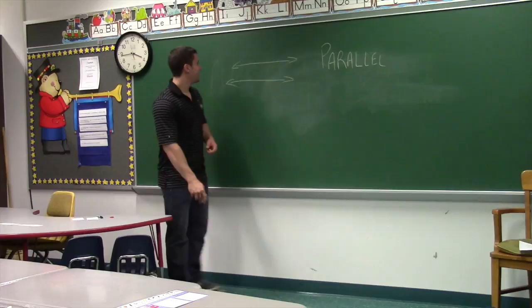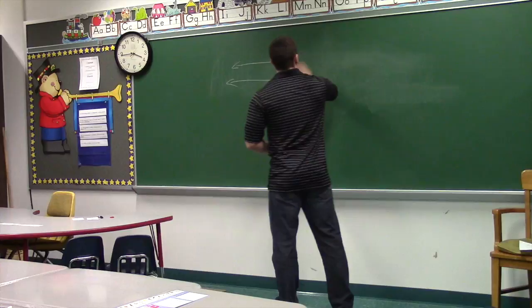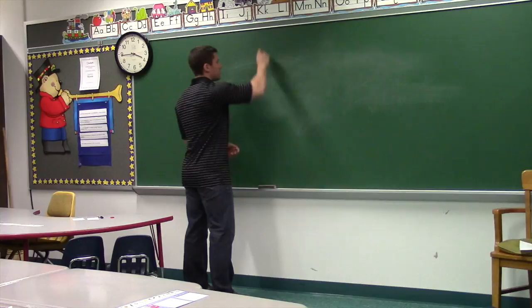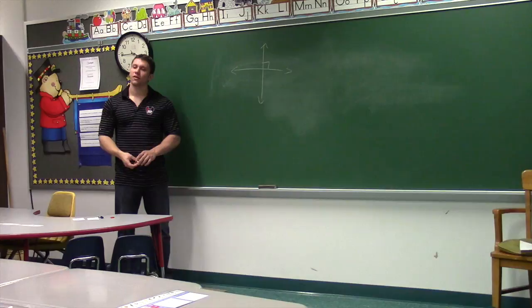Let's say these lines do intersect, and when they intersect they form an angle, and that angle is 90 degrees. We have a line here and a line here, and they form a 90 degree angle. What do we call that? What can we say about these two lines? They're perpendicular. Perpendicular lines.